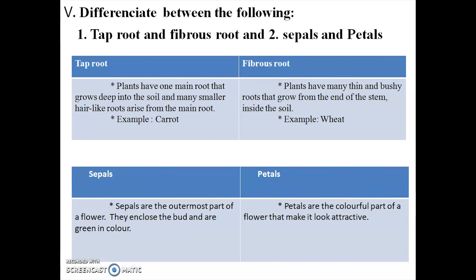Fibrous root: plants have many thin and bushy roots that grow from the end of the stem into the soil. Example: wheat. So tap root has one main deep root with smaller roots branching off, while fibrous root has a bunch of thin roots growing from the stem.